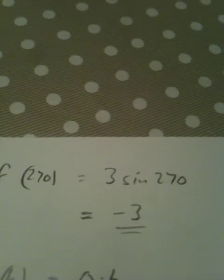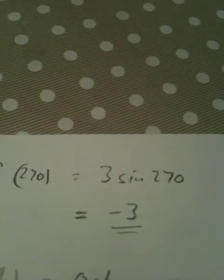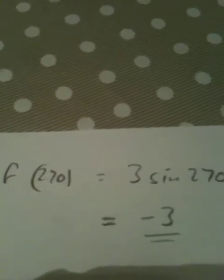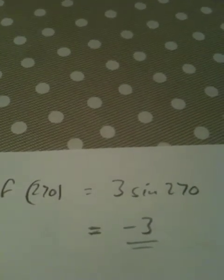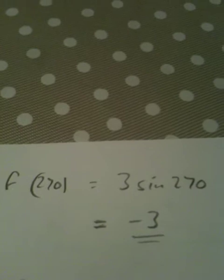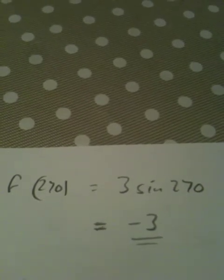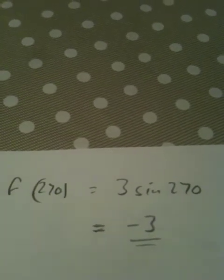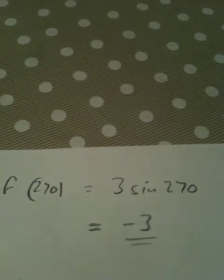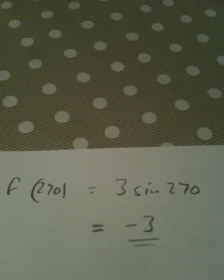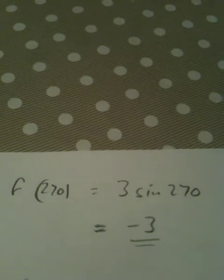Question number 11 starts off giving us f of x equals 3 sin x, and then asks us to find f of 270. So if it says f of 270, it's basically saying replace any x with 270, so 3 sin x becomes 3 sin 270. It's a calculator paper, just type that into the calculator. That'll give us negative 3.